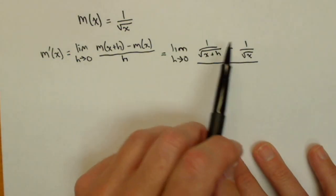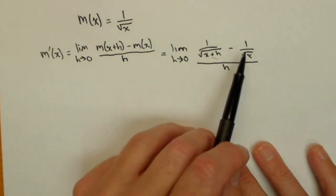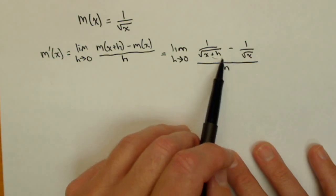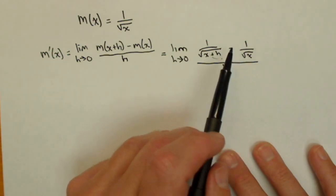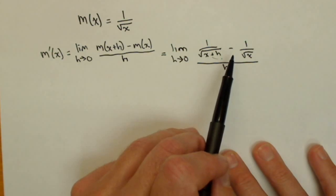Now, whenever we have fractions in a fraction, sometimes one of our moves we can make is to get these to a single fraction. In other words, find a common denominator and simplify that numerator.